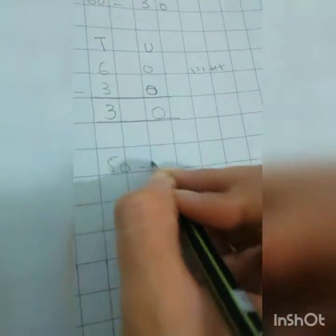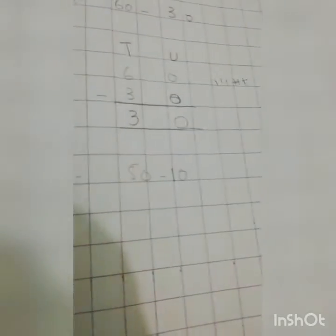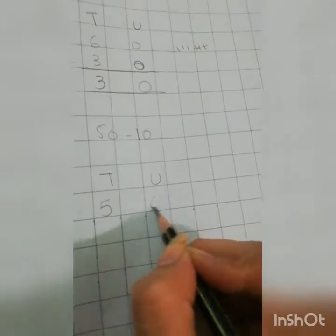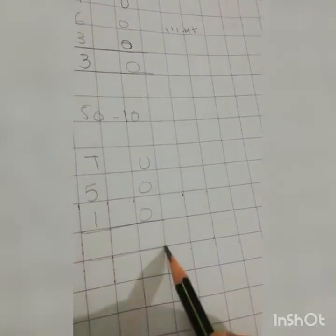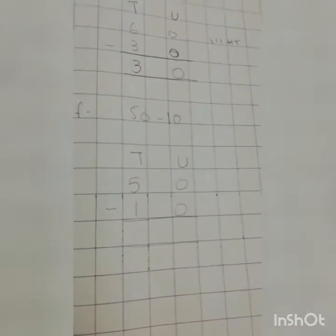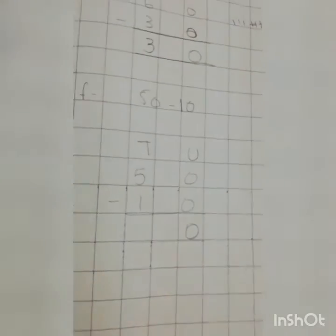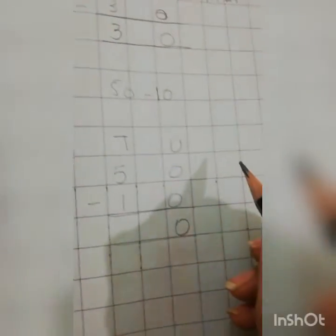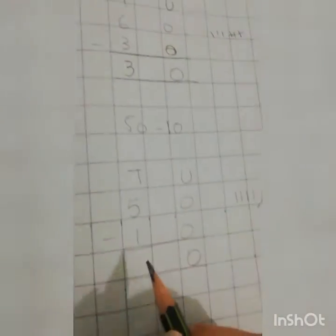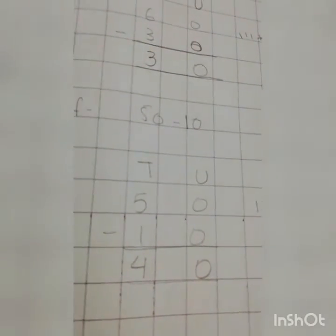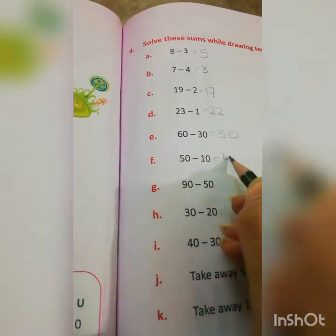Now see number F: 50 minus 10. We will draw 10s and units. Step number 1: we have to subtract the units, but there are no units — this is 0. And 5 minus 1: draw 5 lines, take away 1, remaining is 4. So the answer is 40.